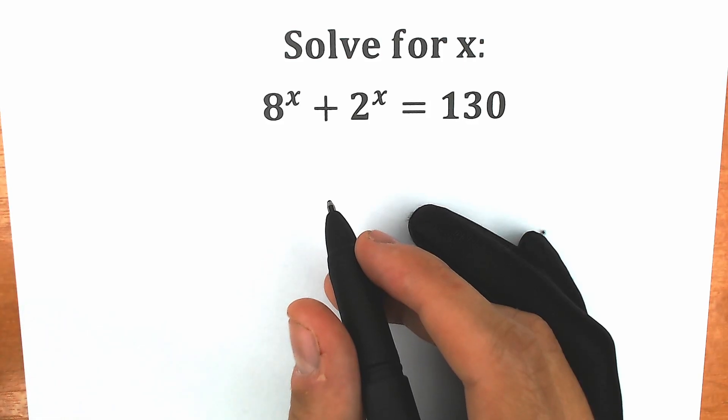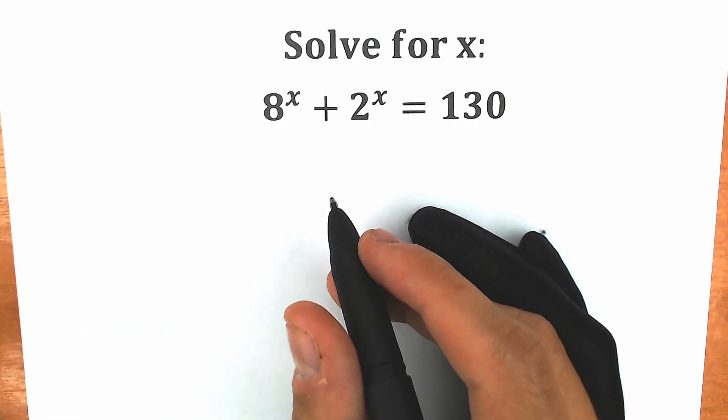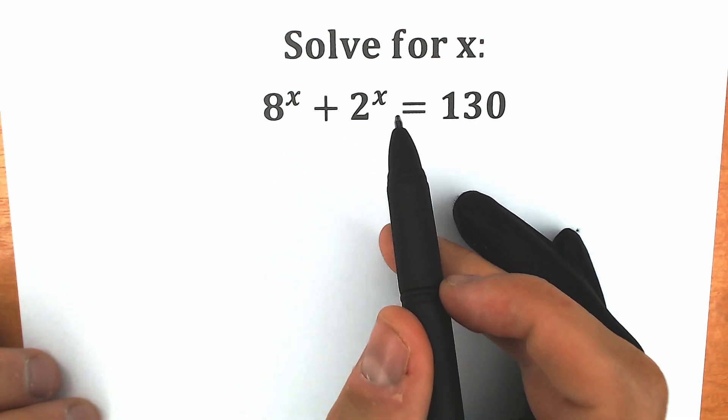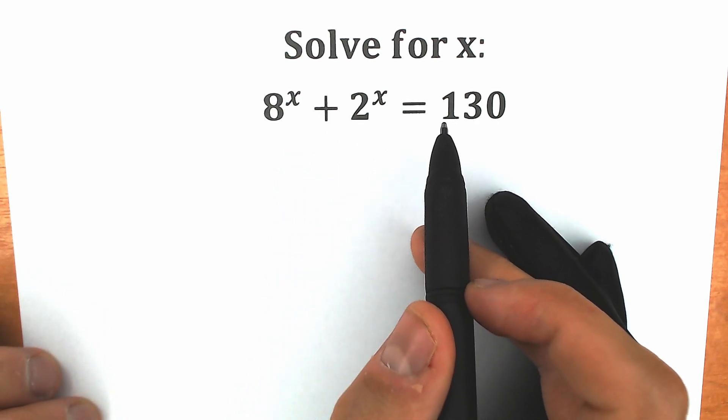Hello everyone! Happy to see you here on my channel HiMSMatics. Today we have a really interesting, relaxing exponential equation: 8 to the x plus 2 to the x equal to 130.